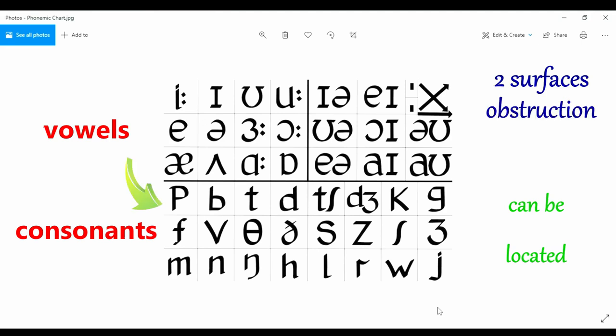The p sound, for example, is composed of two phases. Pressing your lips together and holding them briefly before releasing the airflow. Additionally, the voice is activated.